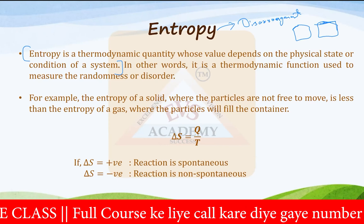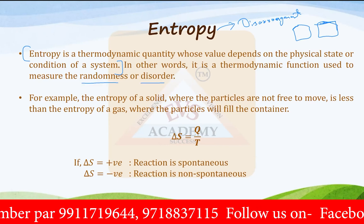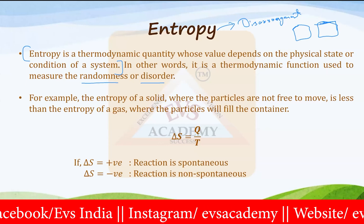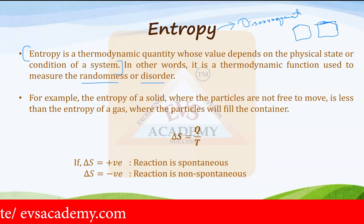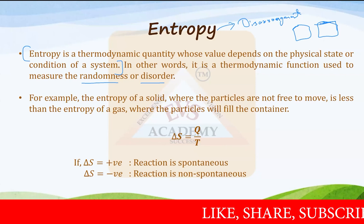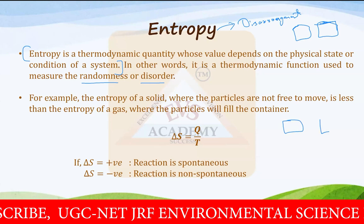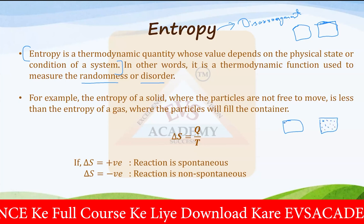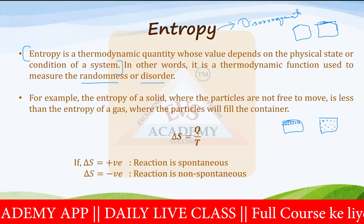In other words, entropy is the thermodynamic function used to measure the randomness, disorder, or disarrangement in any particular system. Higher the disorder, higher the randomness — higher is the entropy value. Lower the randomness, lower the disorder — lower is the entropy. For example, if there is a particular solid and a particular gas: in gas, the particles move constantly and arrangement is not there, but in solid there is a crystal-clear arrangement. So the entropy of a gaseous container is very high (high delta S), but in solid, delta S is very low.